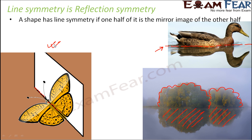I urge you to do this on your own. Take a picture of a butterfly on a sheet of paper, take a mirror, place it along the line of symmetry, and you would see that the mirror image of one half of the butterfly is the other half. This shows that the two halves are mirror images of each other — so this type of symmetry is called reflection symmetry. Whenever we talk about mirror images, they happen due to reflection, and that is why line symmetry and reflection symmetry have a very close relation.